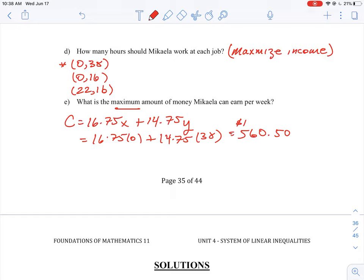So then we'll look at the other equation. If we put in zero and 16 for our second equation, we're going to be making much less than 560. So (0,38) would be the one that would make the most amount of money at this point. But then we have to check the other equation. So we have 16.75 times 22 plus 14.75 times 16. And then if we plug those values into the equation, we'll see that we get a value of 604.50.